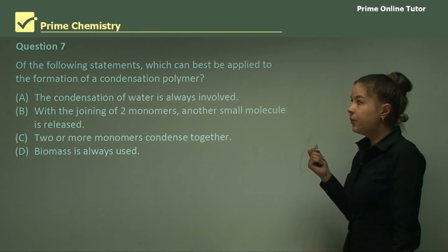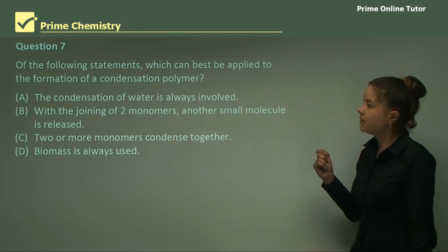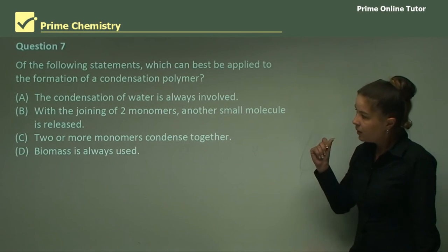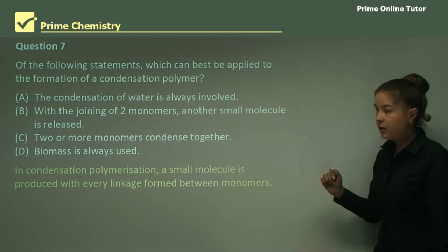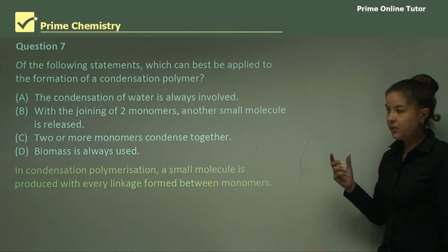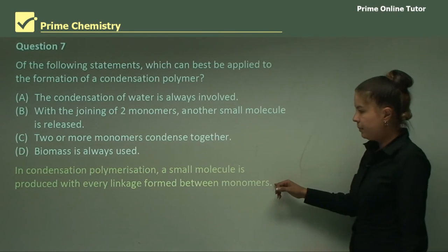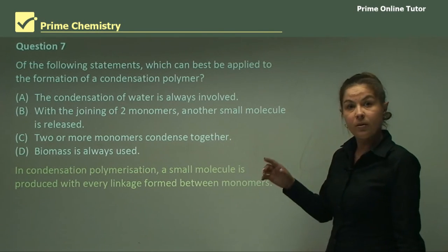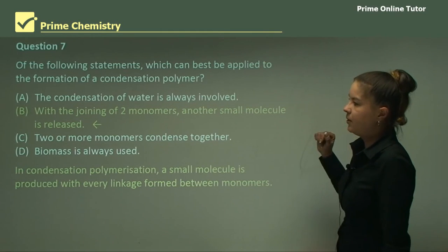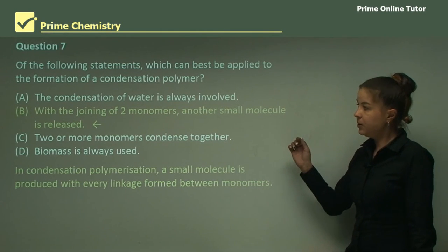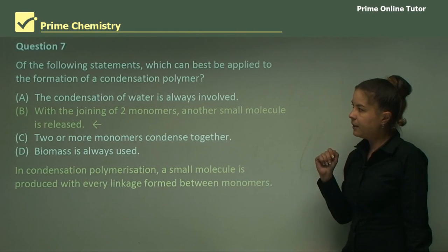Question seven, of the following statements, which can best be applied to the formation of a condensation polymer? Now, in condensation polymerization, a small molecule is produced with every linkage formed between the monomers. And if you remember, for cellulose, the small molecule is water. So our answer there is going to be, with the joining of two monomers, another small molecule is released. So our answer is B.